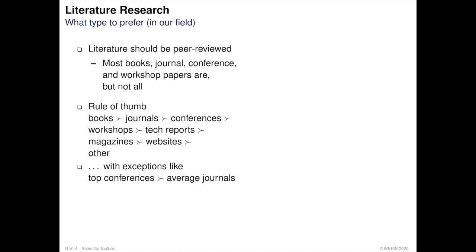Following that are magazines, then websites, and finally all other sources of scientific material. There are, of course, some exceptions to this list. For example, a paper published at a top conference would rank higher than the average journal article.